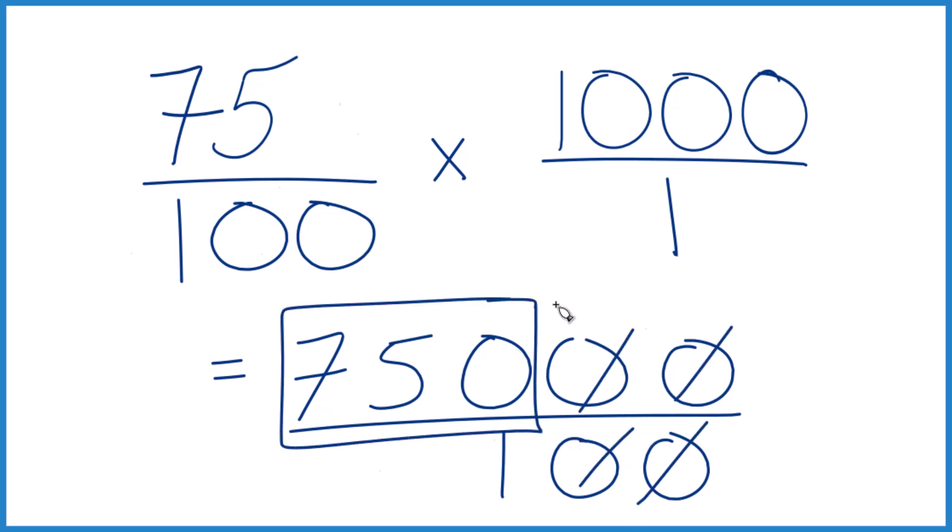Just like we got before. You could also take 75, divide by 100, to get 0.75, and then multiply by 1,000, you'd get 750.